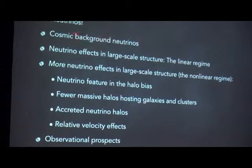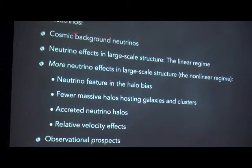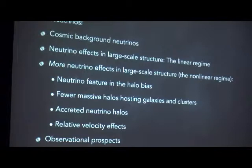Something I think is really exciting is this new future where we have to include both types of dark matter when analyzing data sets and hopefully learn more about neutrinos. The outline of my talk: I'll first review some properties of neutrinos and then discuss the cosmic neutrino background, then go into the classic effects of massive neutrinos on large-scale structure — effects on the linear growth of structure — and then discuss additional effects in the nonlinear regime and observational prospects.